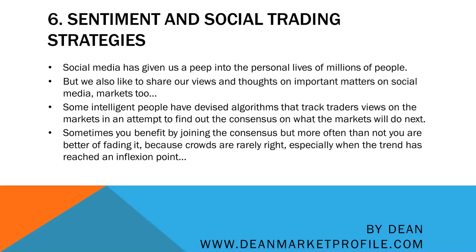So if 70% of people are saying markets may go up, and the majority of those 70% are retail traders — which is very likely — it gives smart, informed people a solid reason to short the market, because retail traders and crowds are rarely right. Especially when the trend has reached an inflection point, or hit an important resistance. If most of them think markets will go up, they are already long, and nobody is left to buy. Smart money uses such tactics to find out the consensus estimate and then, depending on their analysis and context, they might go with it or even go against it.